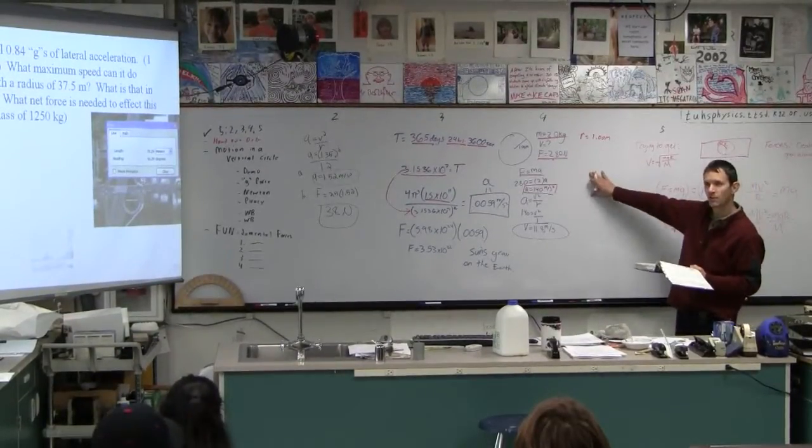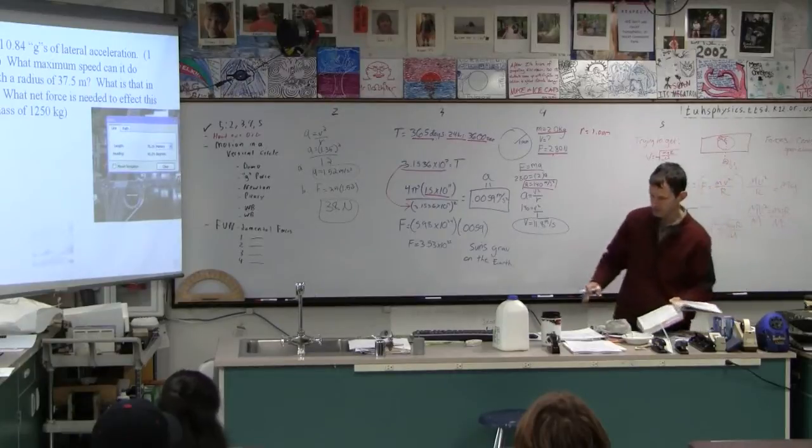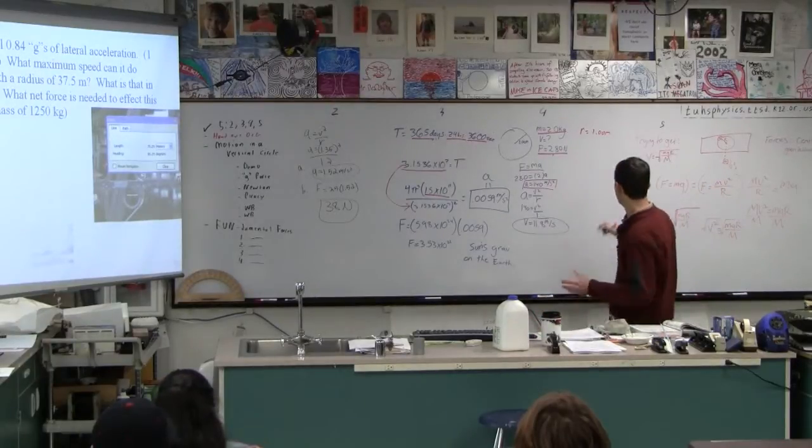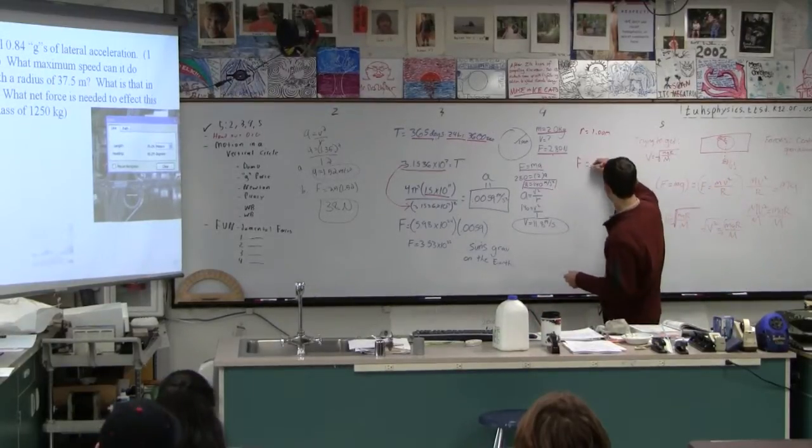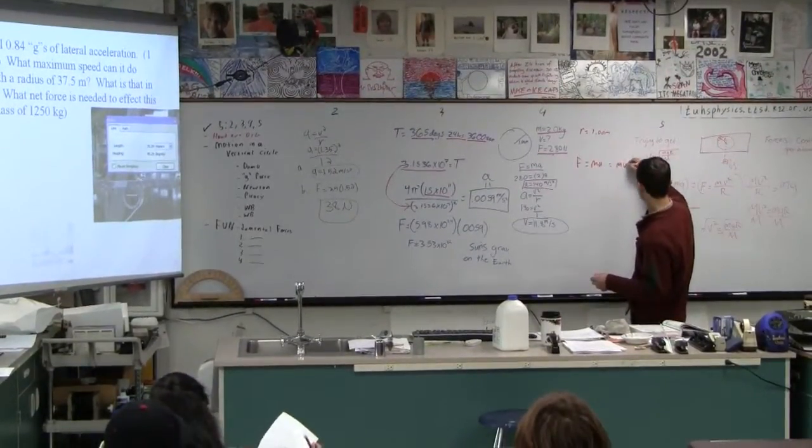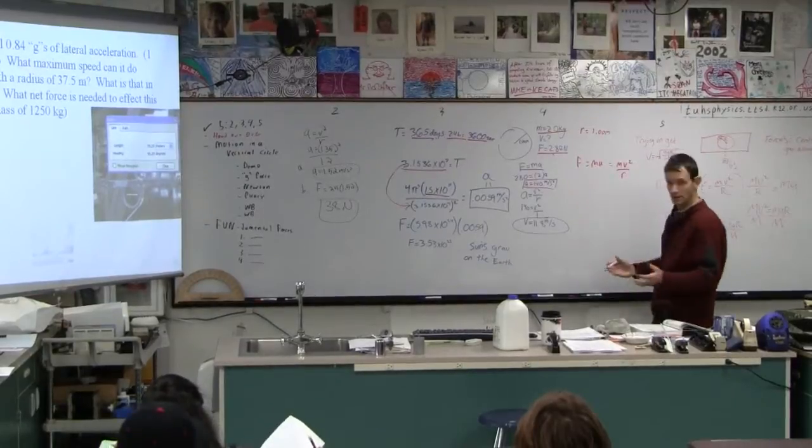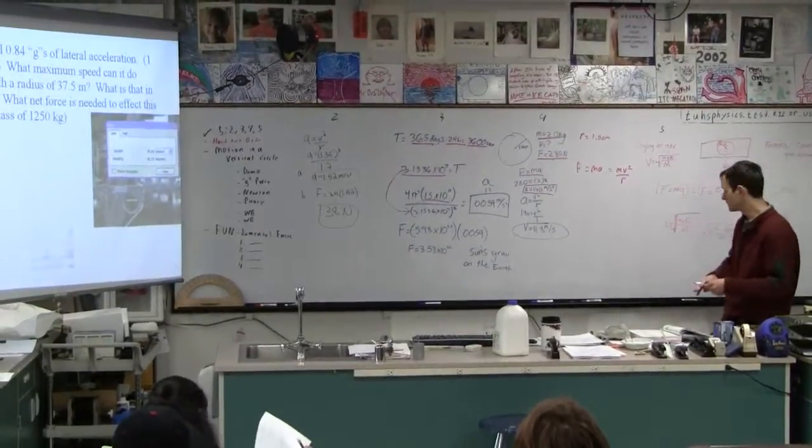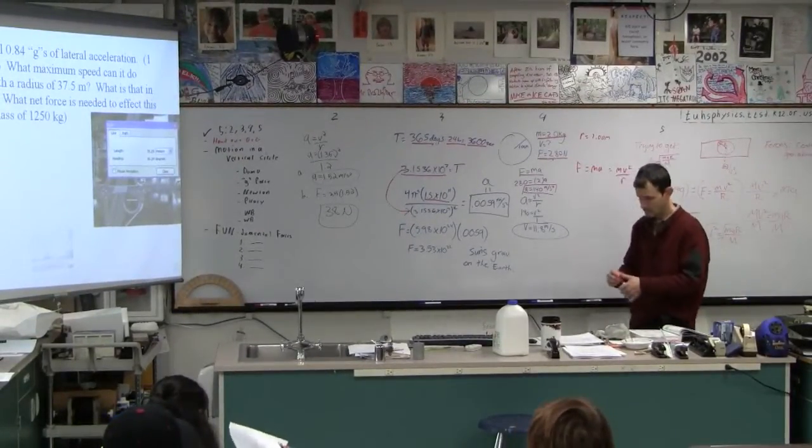Did that answer your question on four? So it's like a two-stepper or if you want to make a formula, if F equals ma and a is v squared over r, then F equals m v squared over r. You could make your own formula. It's not in the data packet.